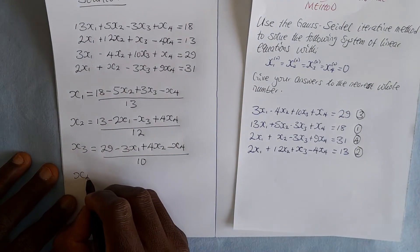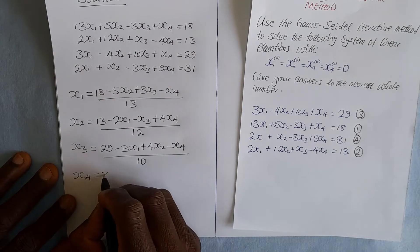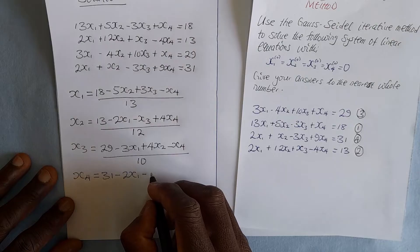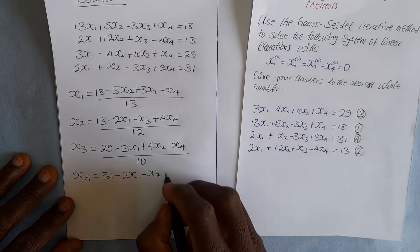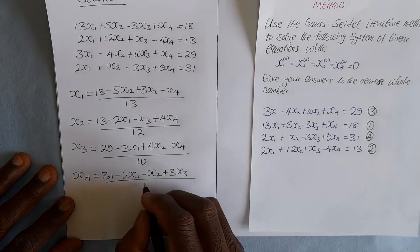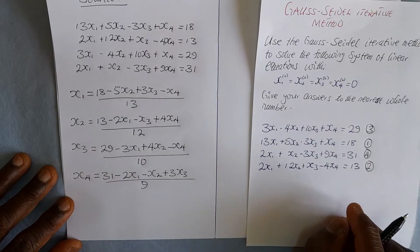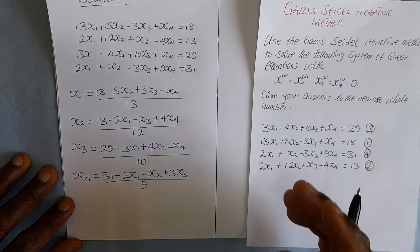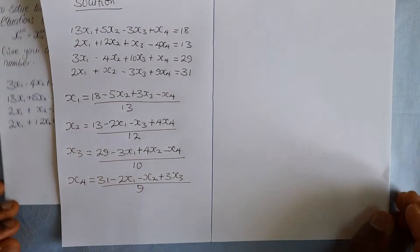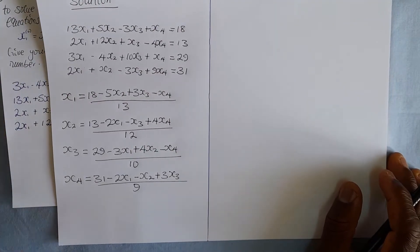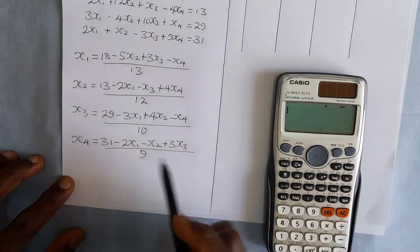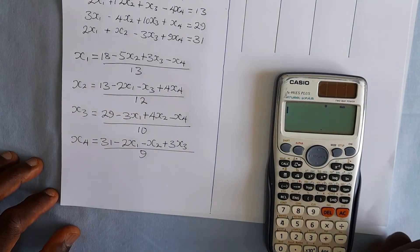Taking the last equation and making x4 the subject, we divide by the coefficient of x4, which is 9. We are now done rewriting the system. We go ahead and build our iteration table, and from there we will start using the calculator.